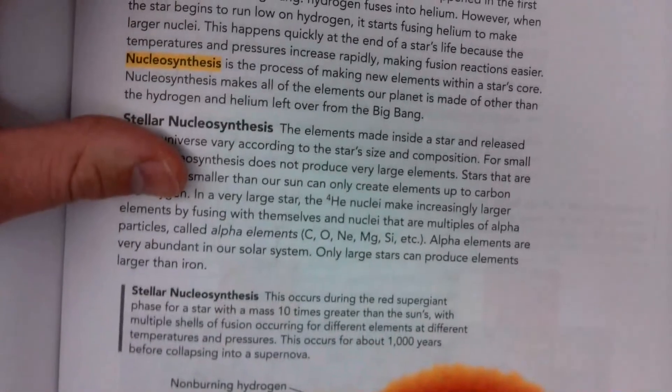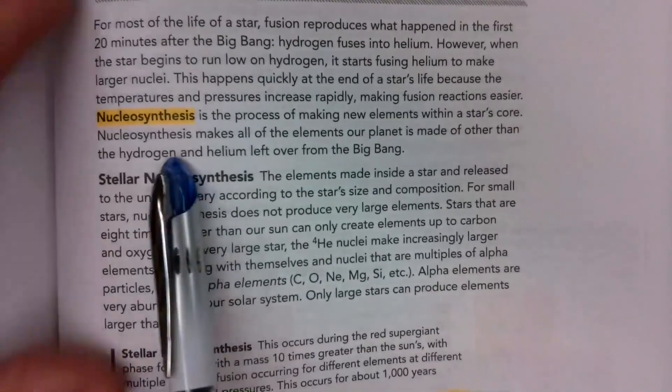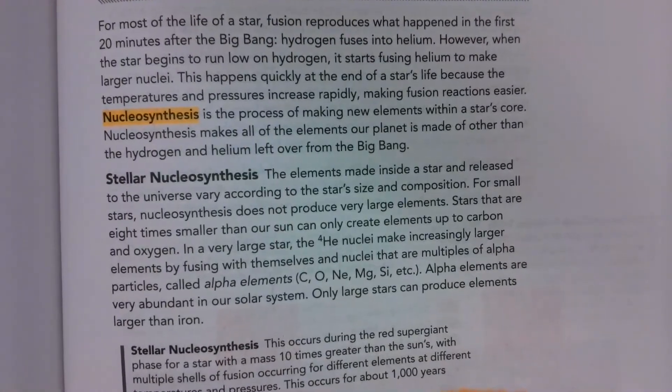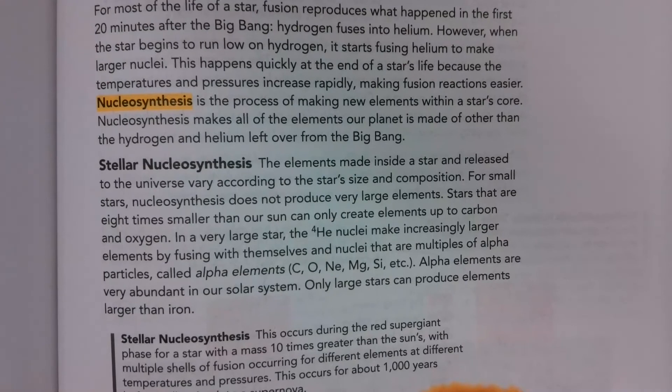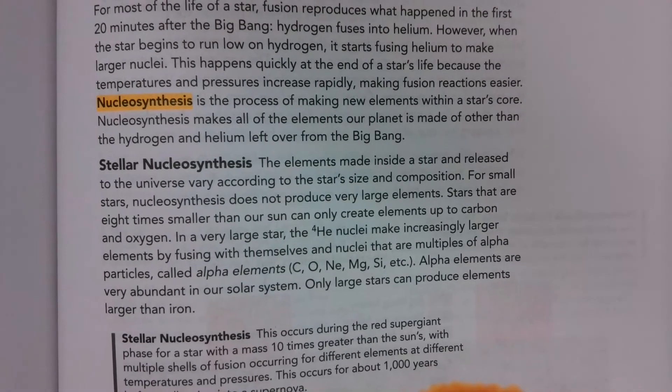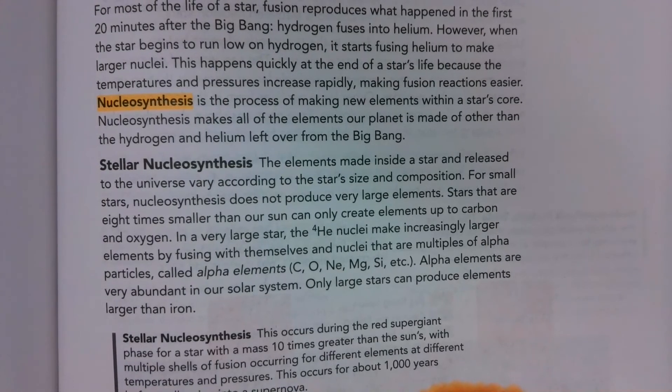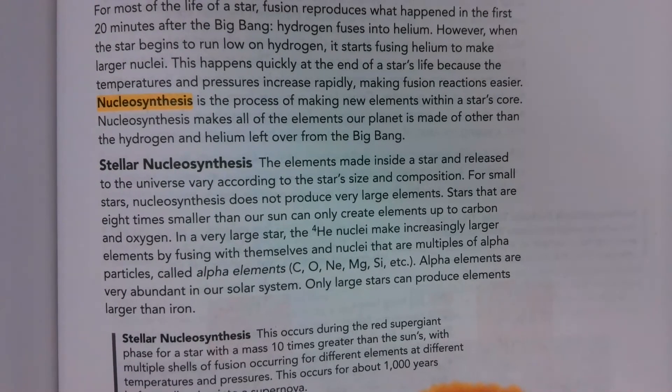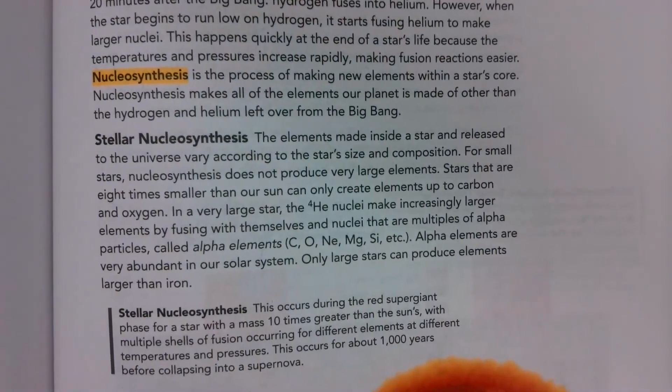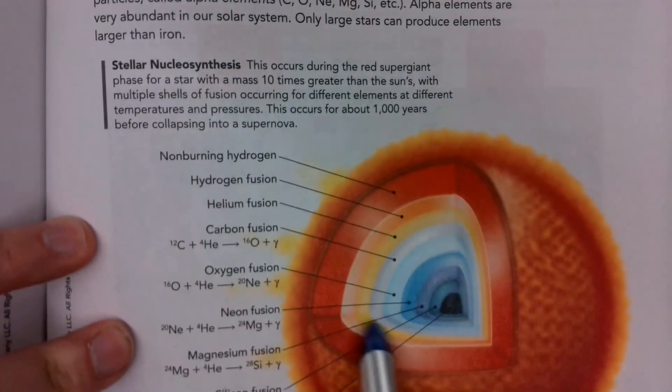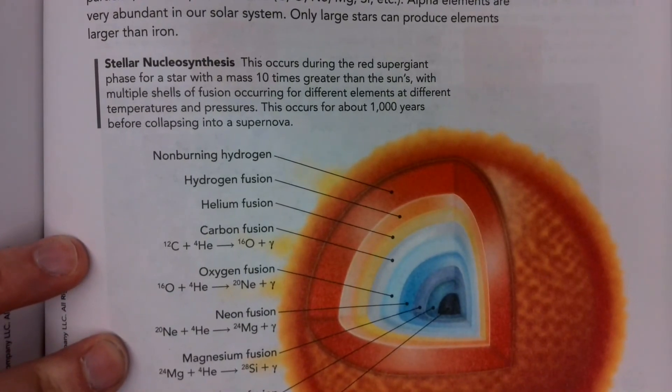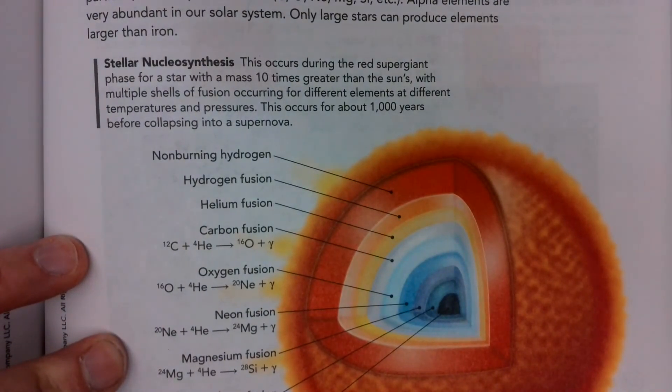So the idea of nucleosynthesis is that the stars are responsible for creating a bulk of the matter that we have today. And there's other processes of decay that create other elements, like cosmic rays can cause beryllium or lithium to form through decay. So a lot of our elements start out with these elements and they decay into other things, and that allows us to have the variety of elements that we have today.